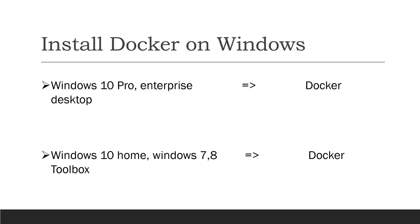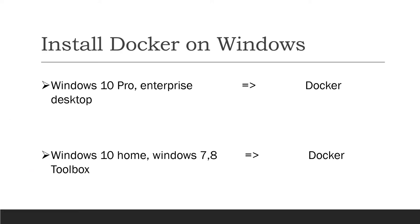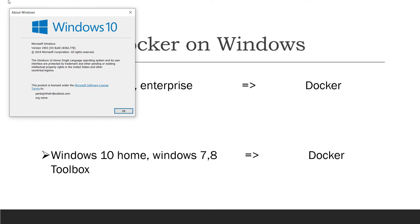To find out which Windows version you are using, go to the Run command and type 'winver' — that is Windows version — and press OK. It will show you the Windows version you are currently using.